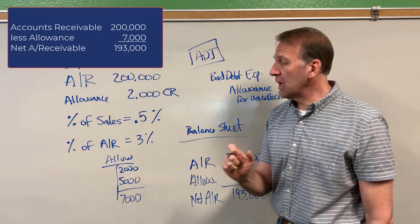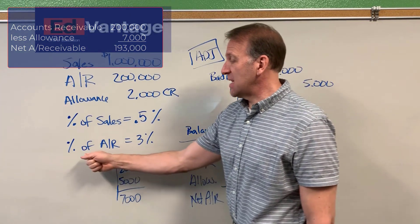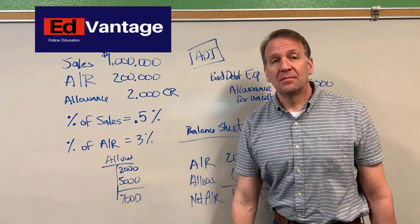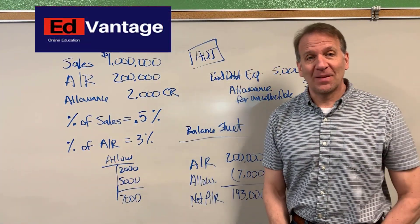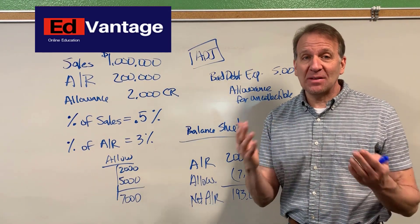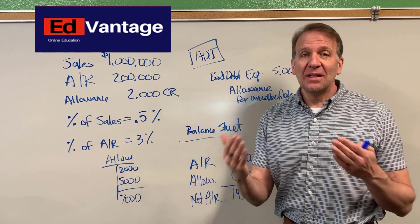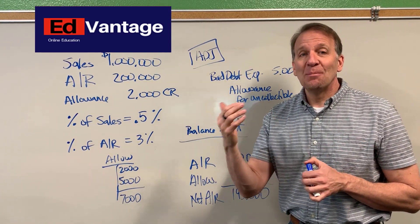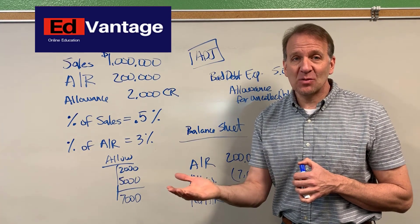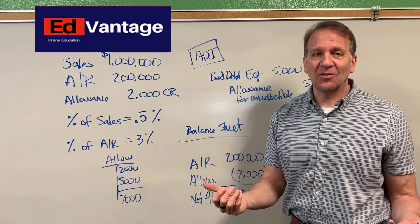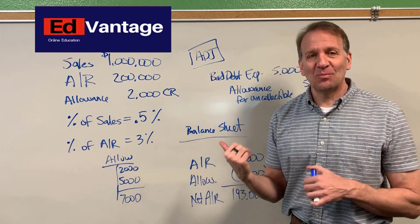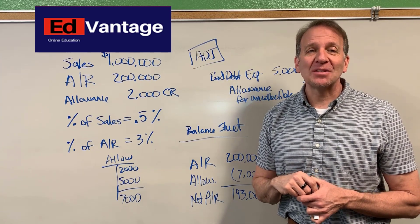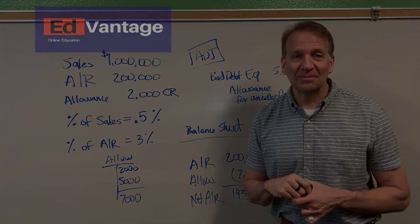In the next video, we're going to go over the percent of accounts receivable method. The allowance method really has two different ways of doing it — you can do it percent of accounts receivable or percent of sales. This method we did today is percent of sales. All right, class, good luck. I hope you're enjoying accounting.